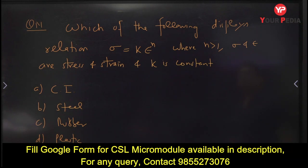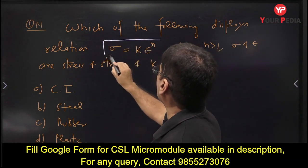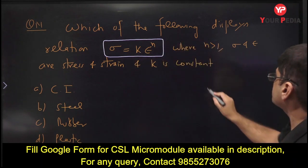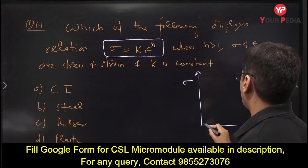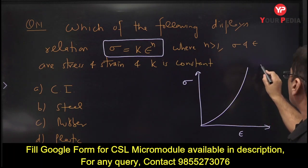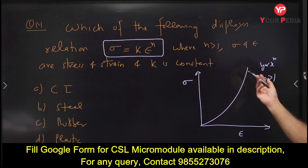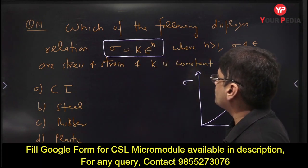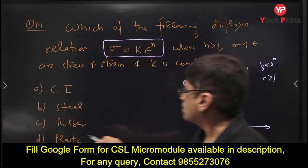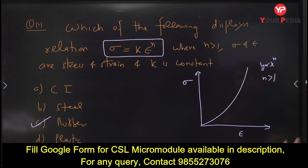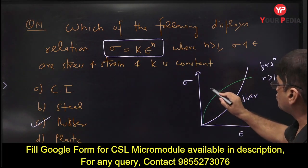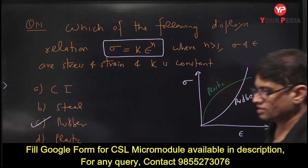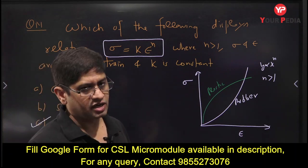Next question: which material displays the relation σ = k·εⁿ where n > 1? If n > 1, the graph of stress vs strain is like y ∝ xⁿ — a curve that bends upward. This graph is typical for rubber: initially it is very easy to deform, but thereafter it becomes difficult. For plastic, the opposite is true — initially difficult to deform, but later it flows. So the answer is rubber.